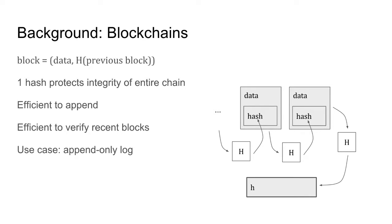First, on the background: a blockchain — what is a blockchain? It's like a glorified linked list where you have some data and a reference to the previous block. You use a hash of the previous block to get your address of reference, and this is how we treat it. There are obviously different types of blockchains with different constructions and parameters and specifications, but abstractly, this is how we're thinking about it.